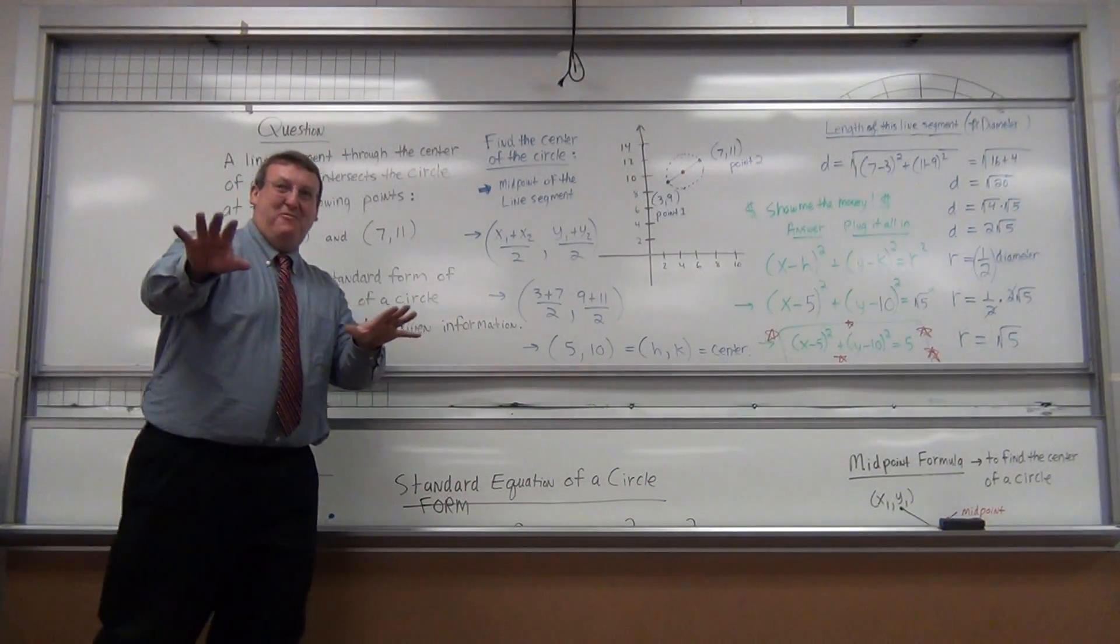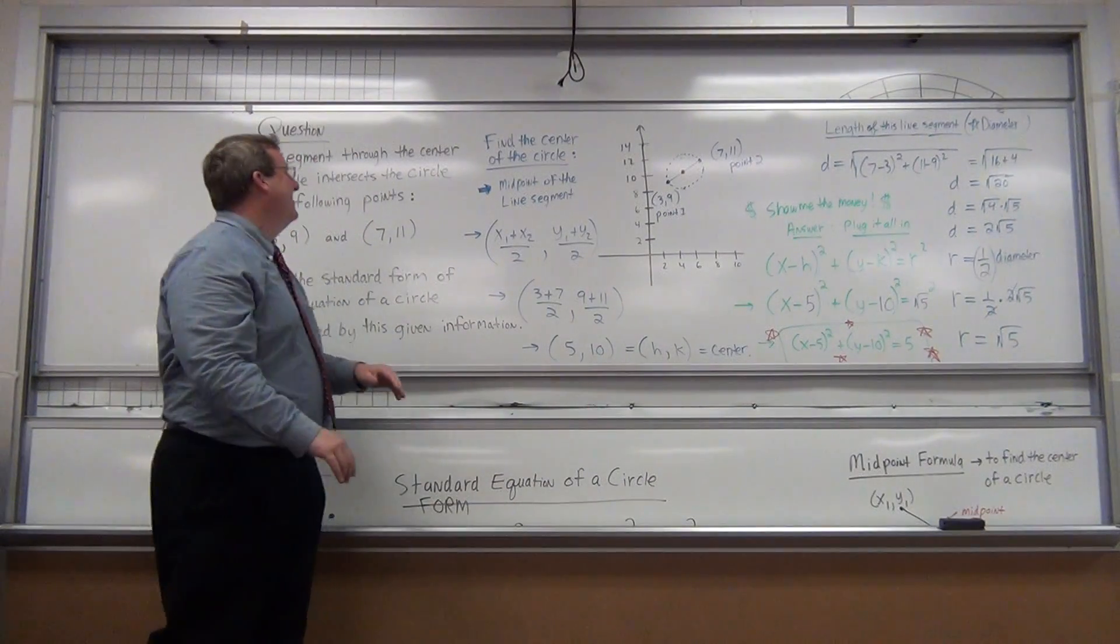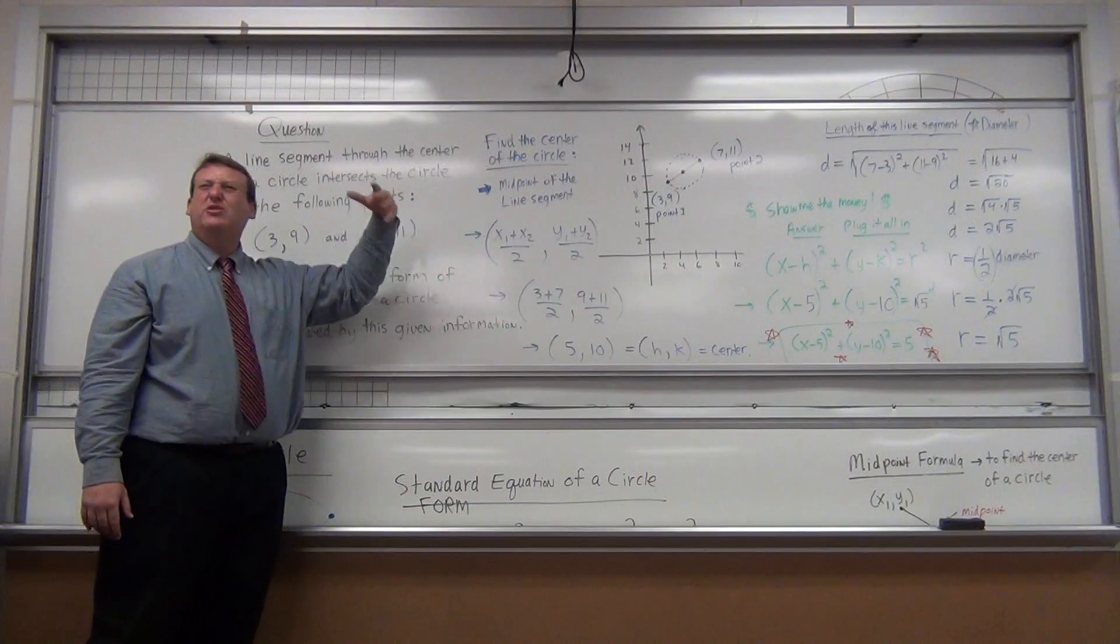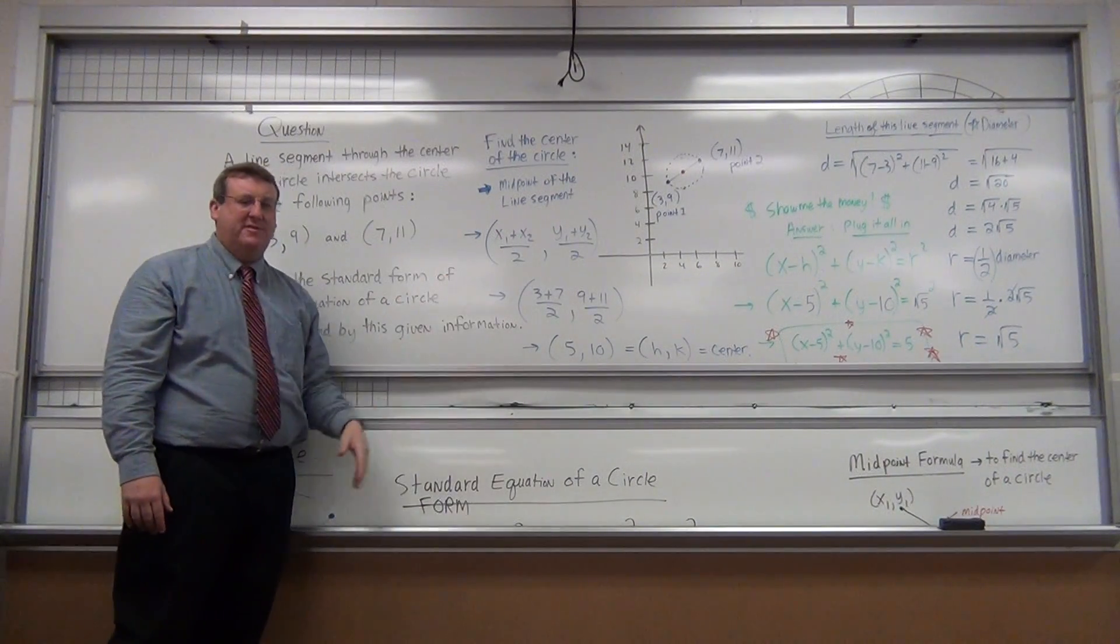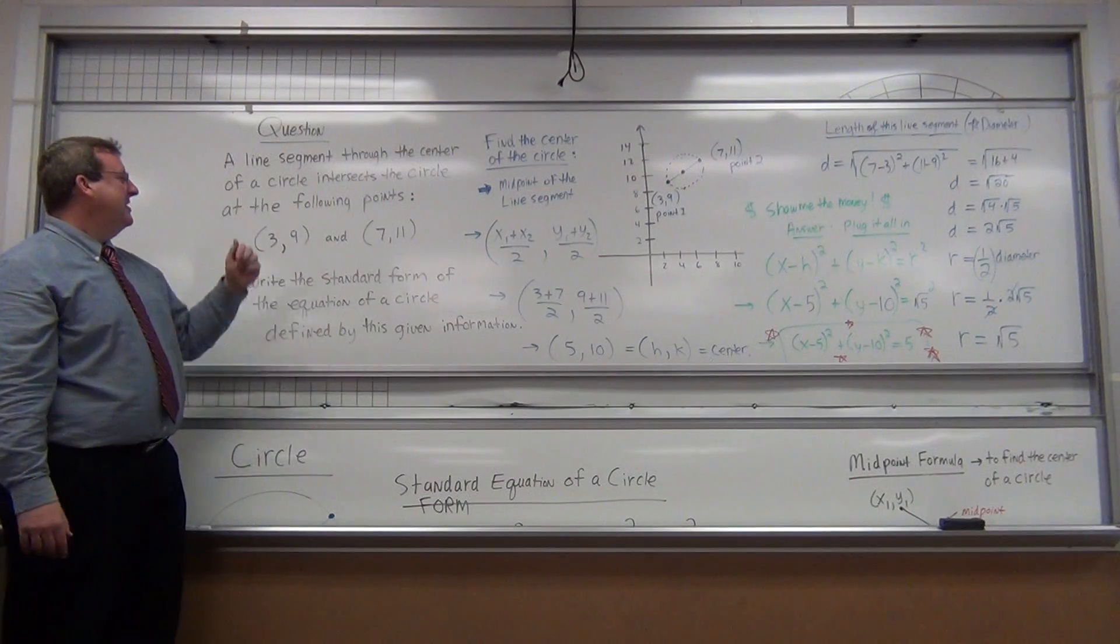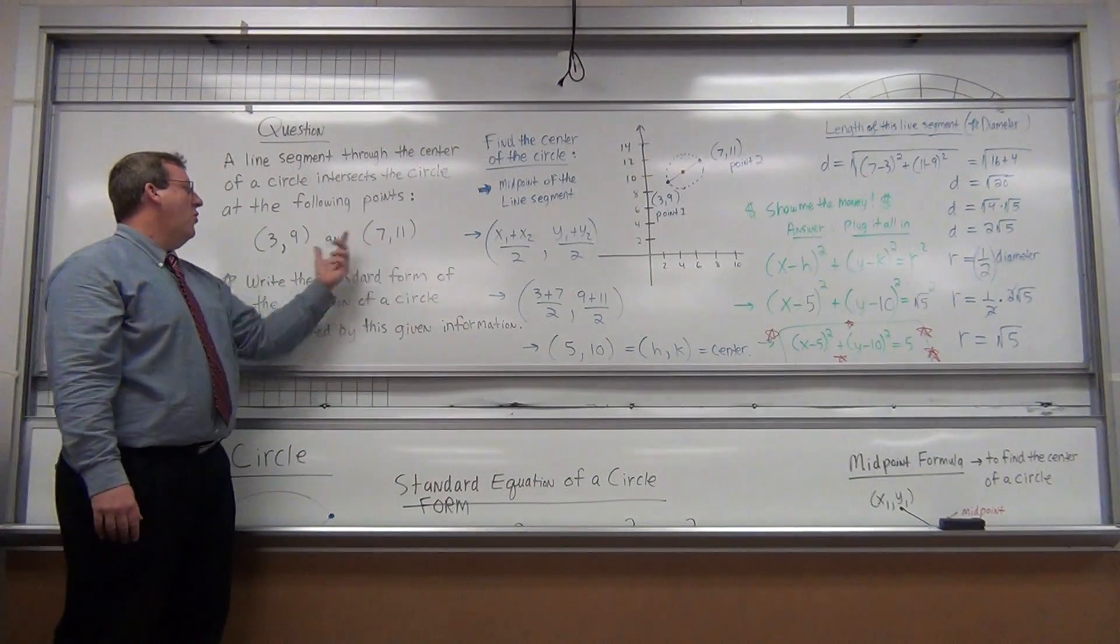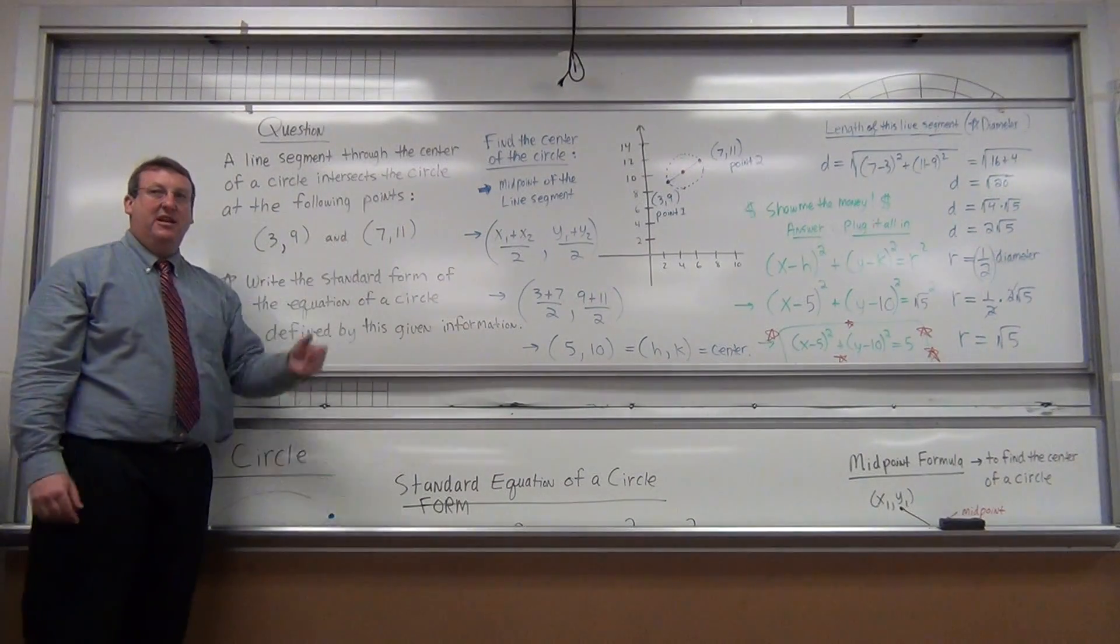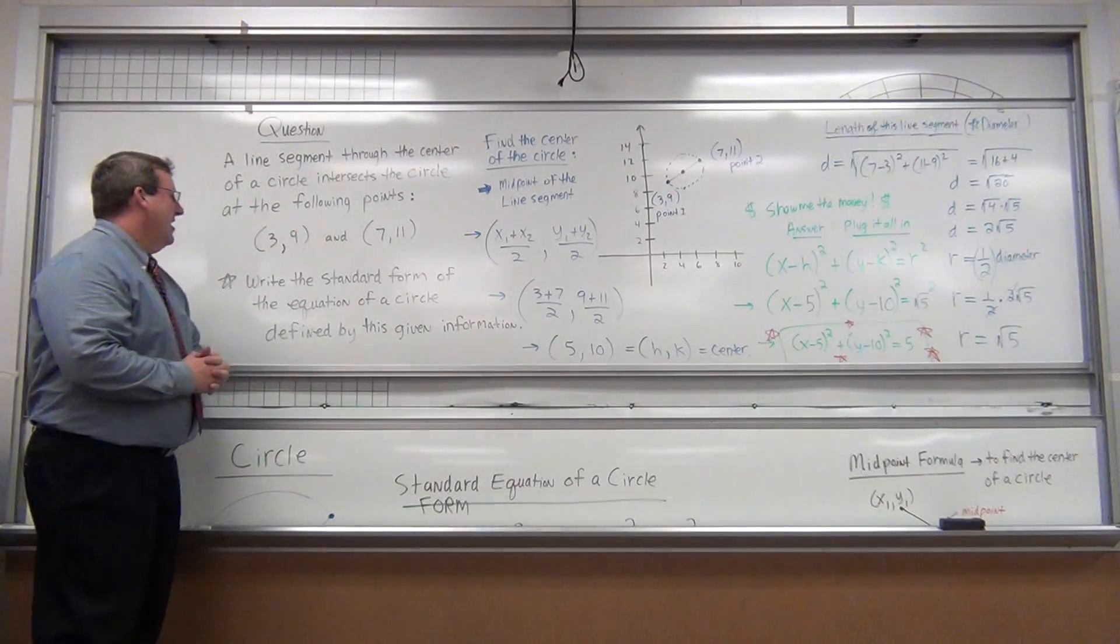Now, don't get intimidated by the board. We'll go through it step by step. But the question is, suppose you have a line segment. So it's a word problem. It's dreaded word problems. The line segment goes through the center of a circle, and it intersects the circle at these two ordered pairs, at these following points. (3, 9) and (7, 11).